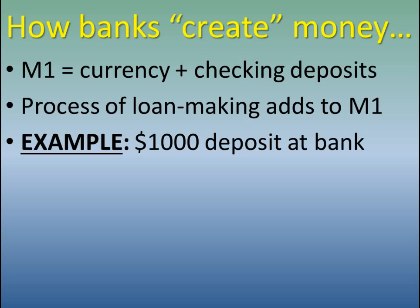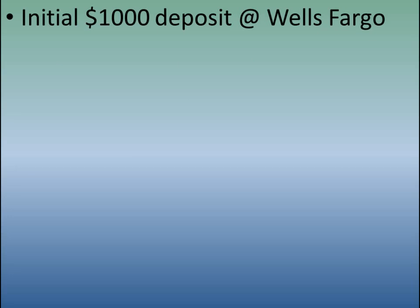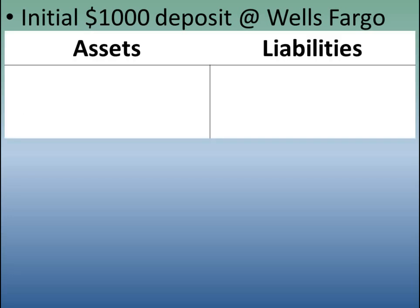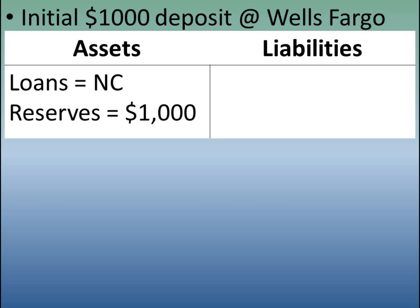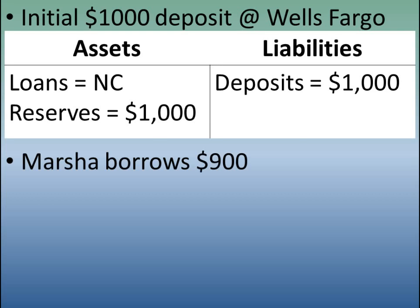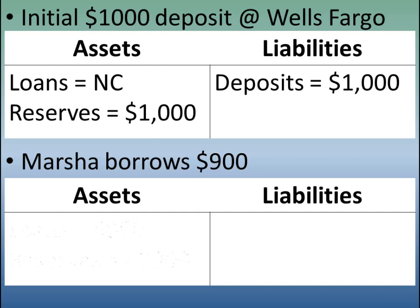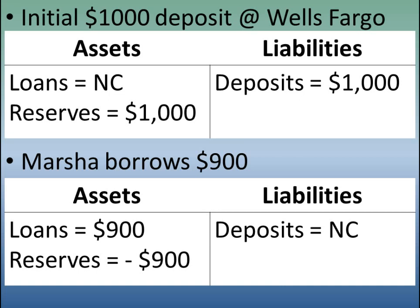Let's take an example: $1,000 is deposited at Wells Fargo. The T-account for Wells Fargo shows no change in loans, but reserves have increased by $1,000, and liabilities have also increased by that initial $1,000 deposit. Then Marsha, a customer of Wells Fargo, shows up and borrows $900 — the maximum they can offer from that $1,000 deposit given the reserve requirement. Wells Fargo now has a $900 asset in loans, has lost $900 in reserves, and still owes the original $1,000 to the depositor.